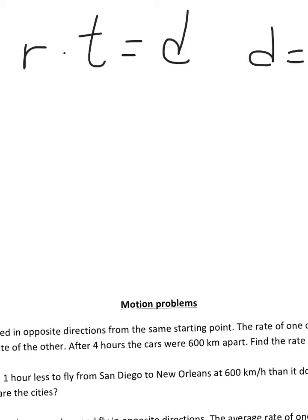Two cars traveled in opposite directions from the same starting point. The rate of one car was 10 kilometers per hour less than the rate of the other. After four hours, the cars were 600 kilometers apart. Find the rate of each car.